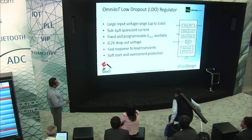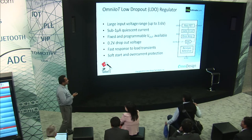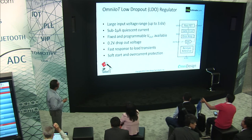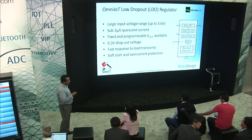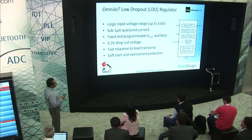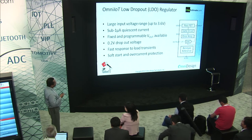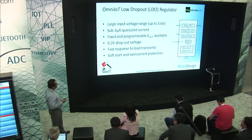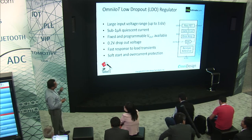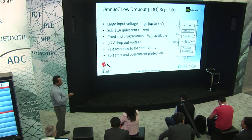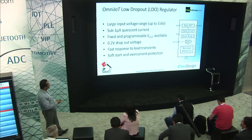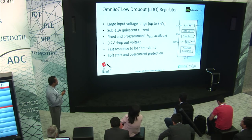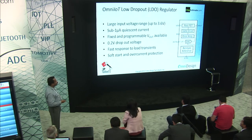Last but not least is the LDO. A key requirement for IoT and low-power applications is low quiescent current. We have LDOs consuming less than 1 microampere quiescent current that can supply up to 100 milliamperes in burst mode peaks, with very good response to load transients. You don't compromise on performance — you get the same features expected from a much higher-current LDO, including soft start, overcurrent protection, and programmable output voltage.